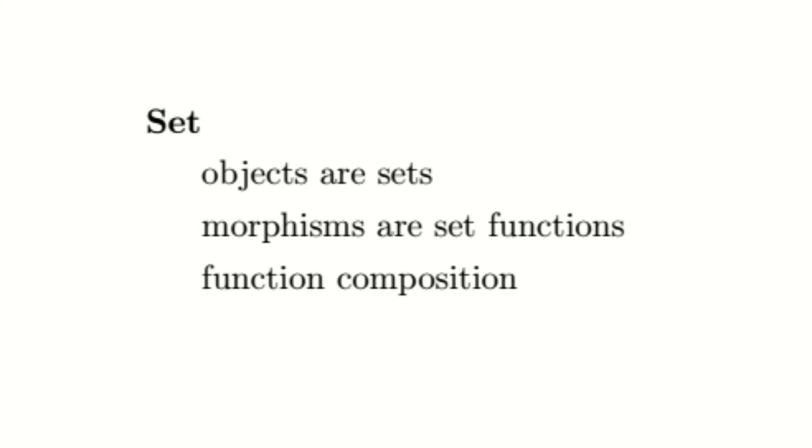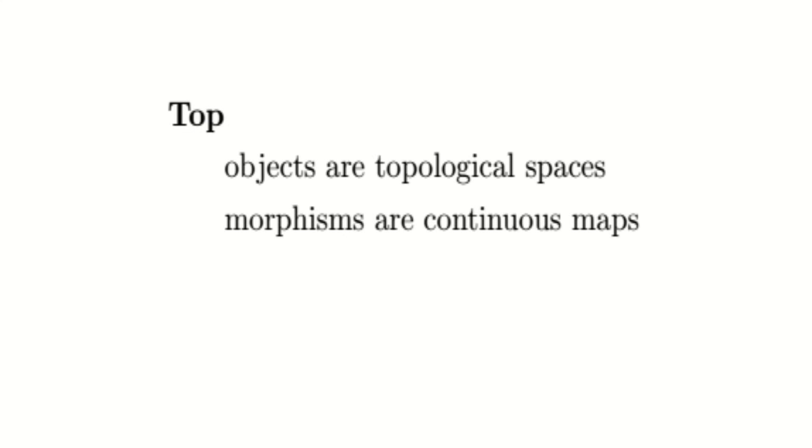We have Top, the category of topological spaces. The objects are topological spaces, the arrows continuous maps, and the composition of arrows is again defined as composition of continuous maps. Isomorphisms in this category are homeomorphisms.